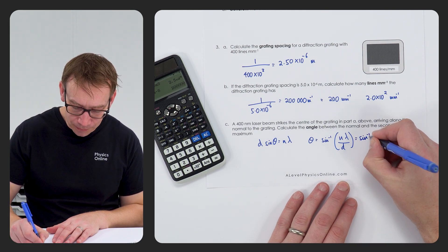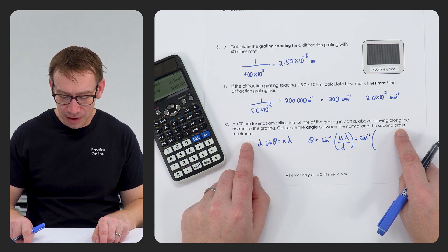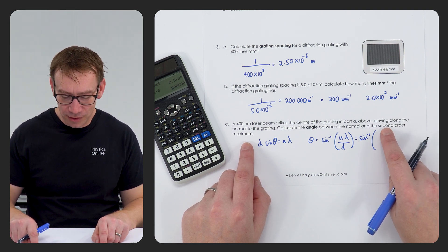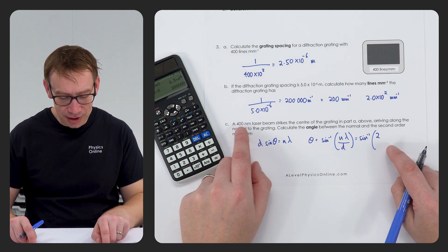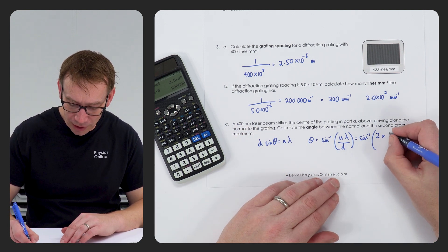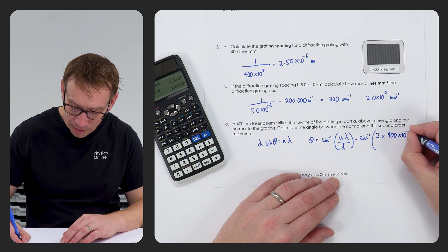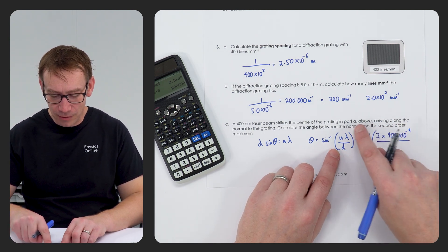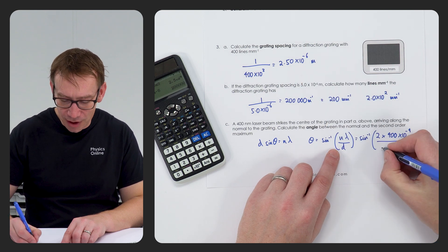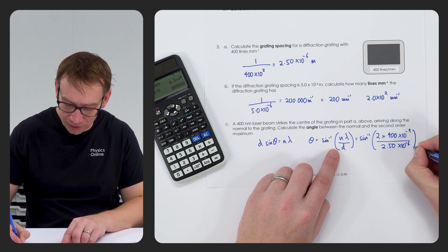Here we're looking at something which is going to be the second order, so therefore n is going to be 2. Lambda is the wavelength, which in this case is 400 nanometres, so that's 400 times 10 to the minus 9. And we're going to divide that by 2.50 times 10 to the minus 6, the grating spacing from part A.